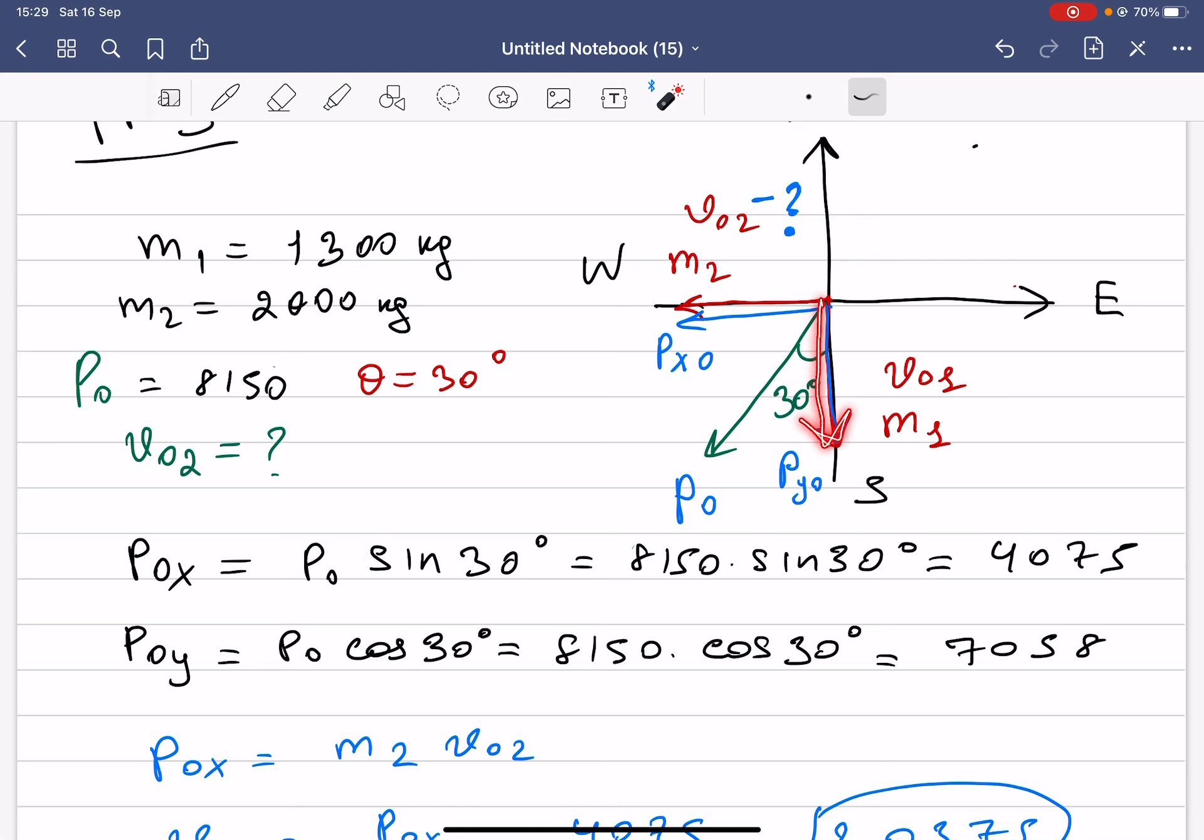Then what about P_y initial? P_y initial is basically P_initial multiplied by cosine theta, and we can get P_y initial. The question was asking what is the initial velocity of the second car.